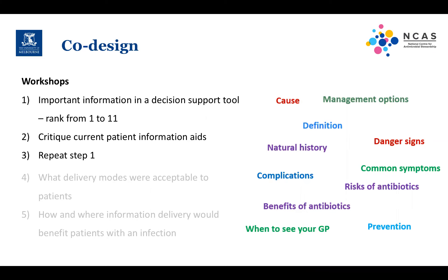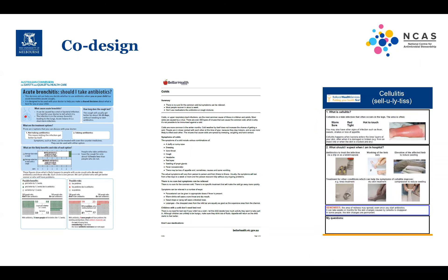We then asked participants to critique some current patient information aids — three out of the five I gave them. The categories included things like what causes acute bronchitis, how long does it last, what is the natural duration, what are the likely benefits and risks, and prevention. Three of the five were two-page documents front and back, and two were single-page only.